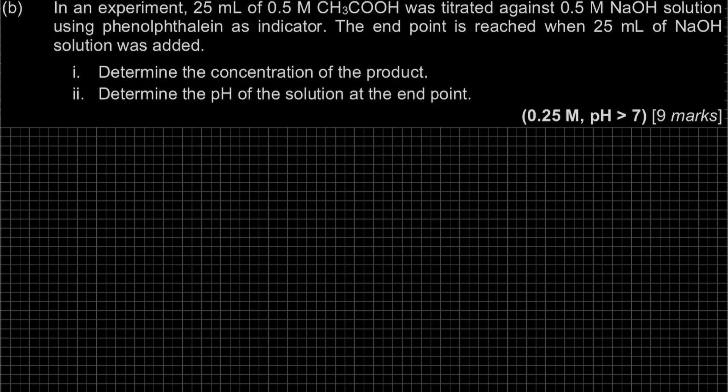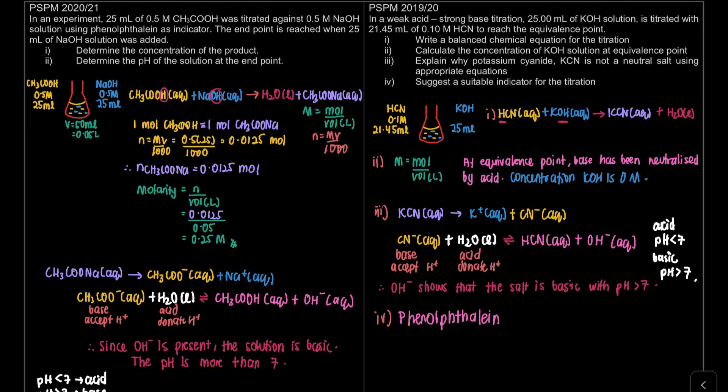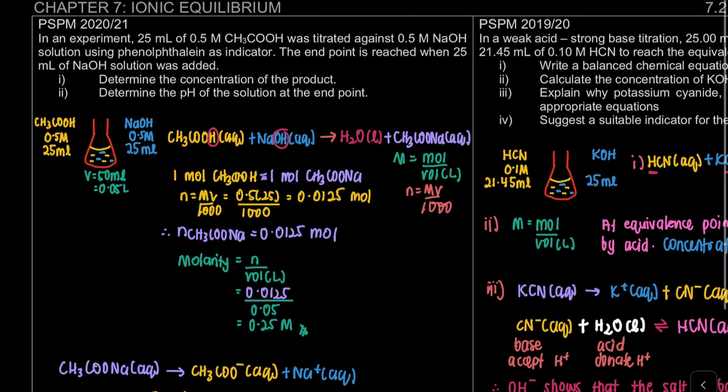For question B here, I'm not going to discuss in this video. I have discussed the question B in another video for 7.2 acid-base titration, where in this video, I've discussed all the questions involving titration. I have discussed all, where I've done the calculation step and the explanation. So, the link for the video will be included in the description. So, please refer back to the description if you want to see how to answer the question, or you want to know how to explain it, or how to get the answer itself. That is all for the video for the PSPM 2020-2021.